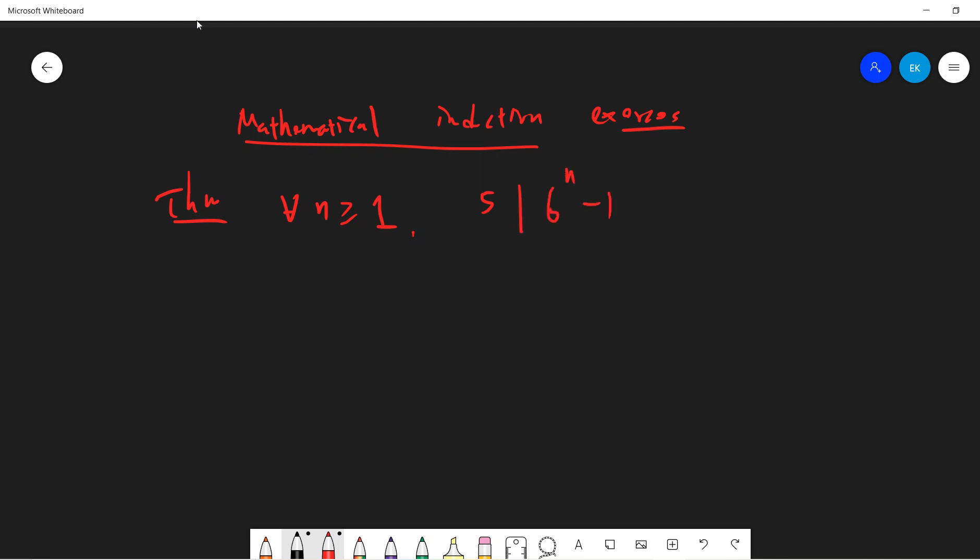So basically 6 to the n minus 1 is always divisible by 5, and I want to prove this by using mathematical induction.